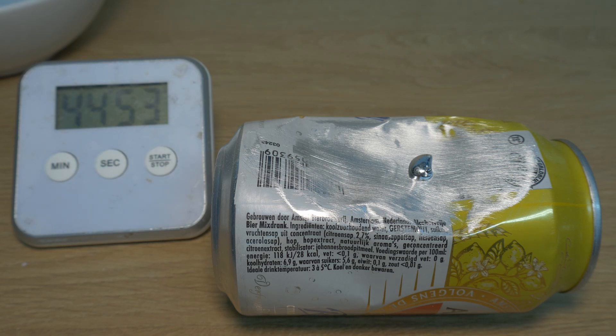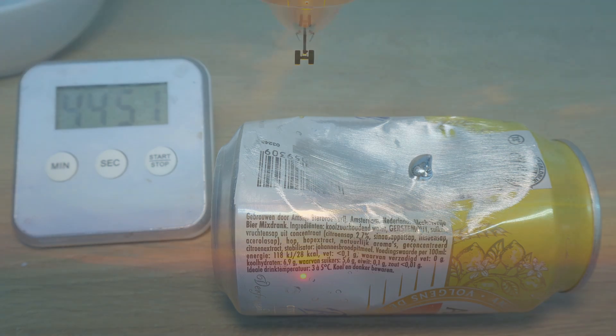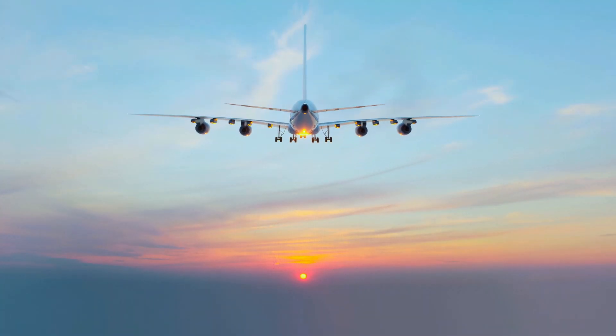And guess what most airplanes are made of? Yep, that's right, aluminum. Bringing gallium onto a plane is basically bringing aluminum's worst nightmare on board.